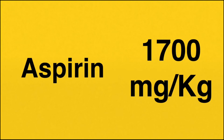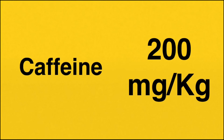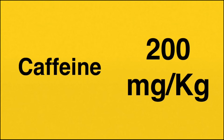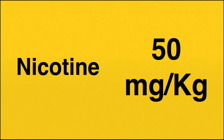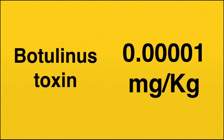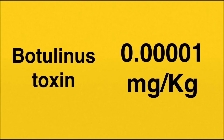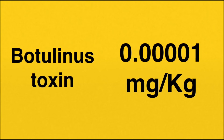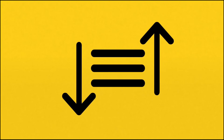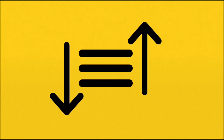Here are some examples of substances and their LD50s. Aspirin has an LD50 of 1700 milligrams per kilogram. Caffeine, the chemical found in coffee and many soft drinks, has an LD50 of 200 milligrams per kilogram. Nicotine, which is found in cigarettes and vaporizers, has an LD50 of 50 milligrams per kilogram. And one of the most deadly chemicals known to humans is botulinus toxin, which has an LD50 of 0.00001 milligrams per kilogram. As you have noticed, as the LD50 amount gets smaller, the toxicity of the chemical increases — so the smaller the number, the more toxic it is.